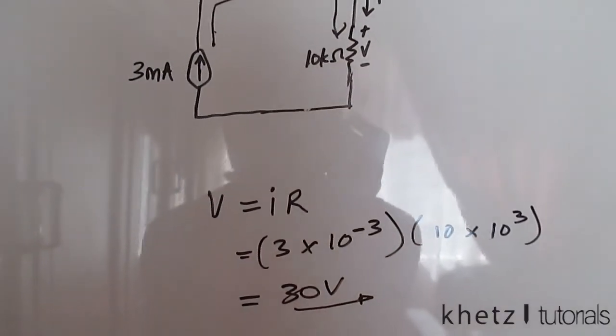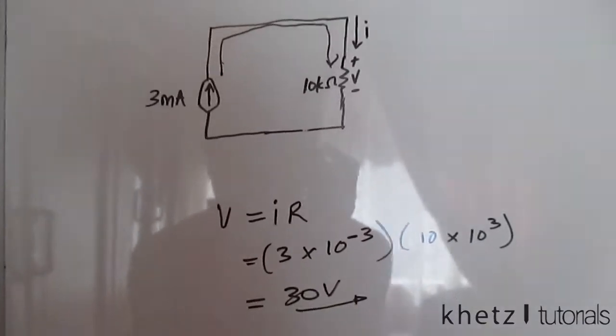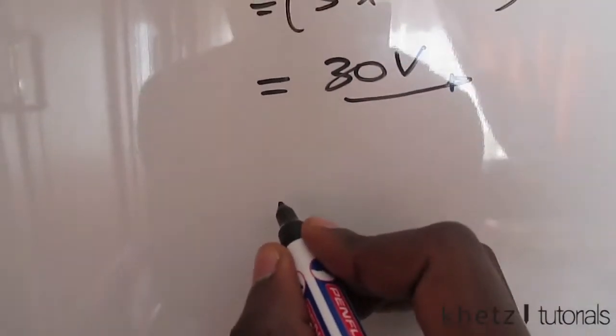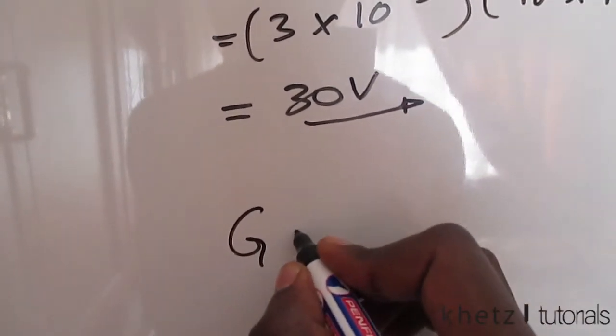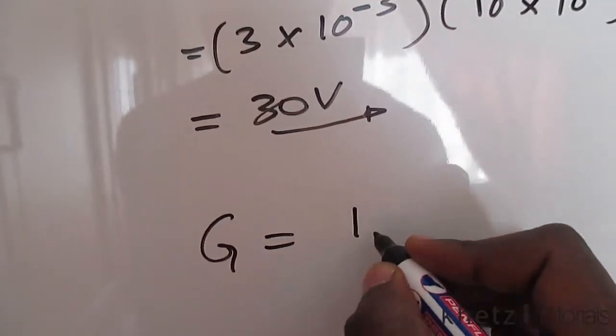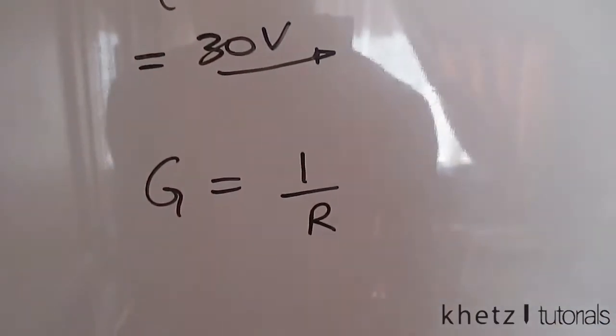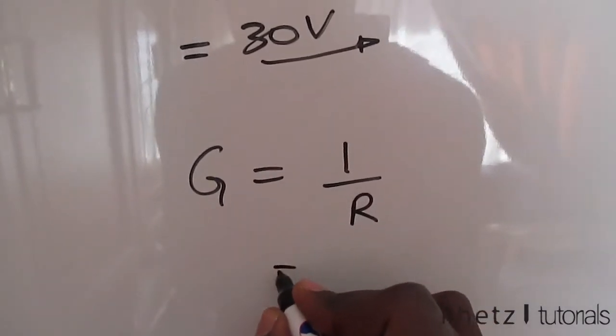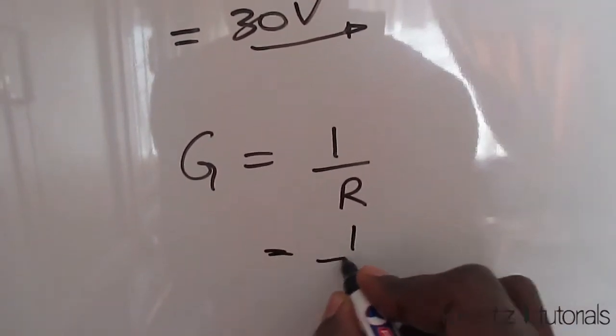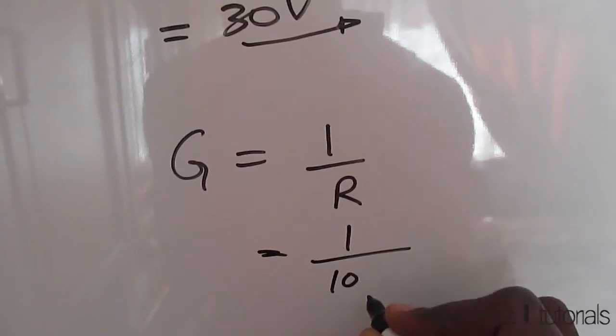Next we are going to find the conductance. Conductance G is simply the reciprocal of resistance. So what you do is you just plug in the value of the resistance, which you're given: 10k.